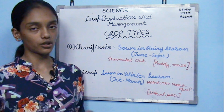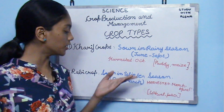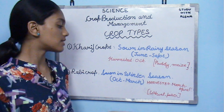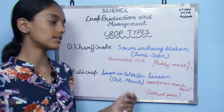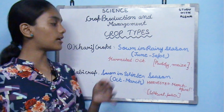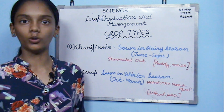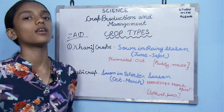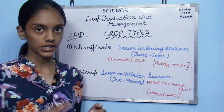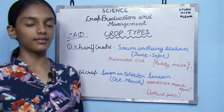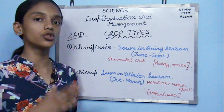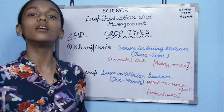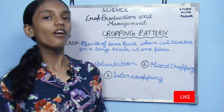Rabi crop is grown in the winter season from October to March and is harvested between March and April. Examples include wheat, pea, and gram. There is also a third type — the Zaid or seed crop — grown in the dry season from April to June and harvested between June and July. Examples include musk melon, watermelon, and cucumber.